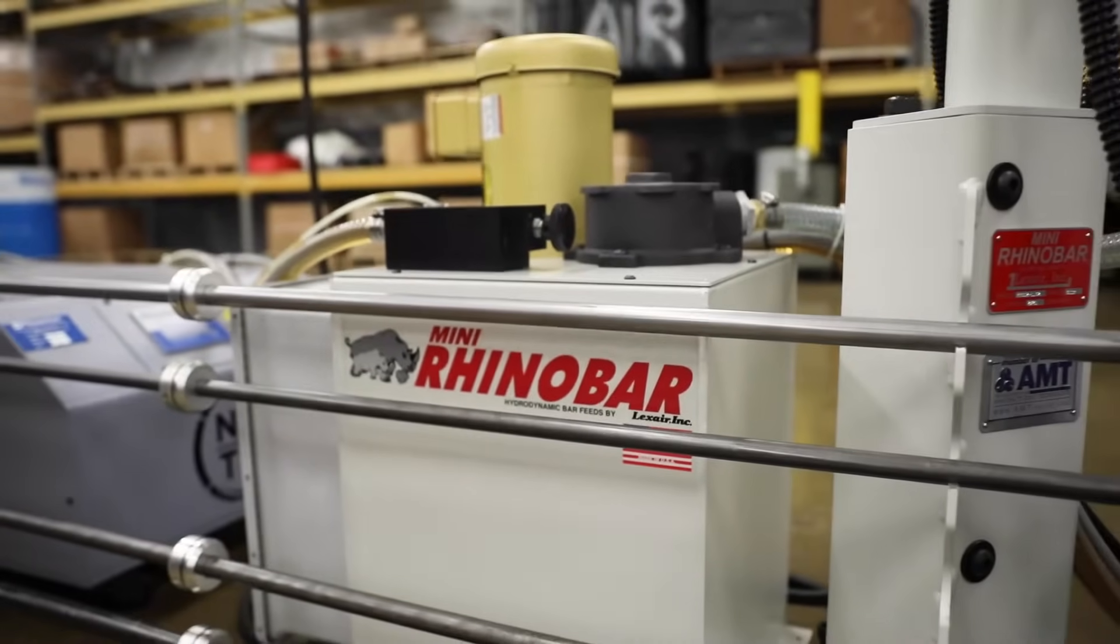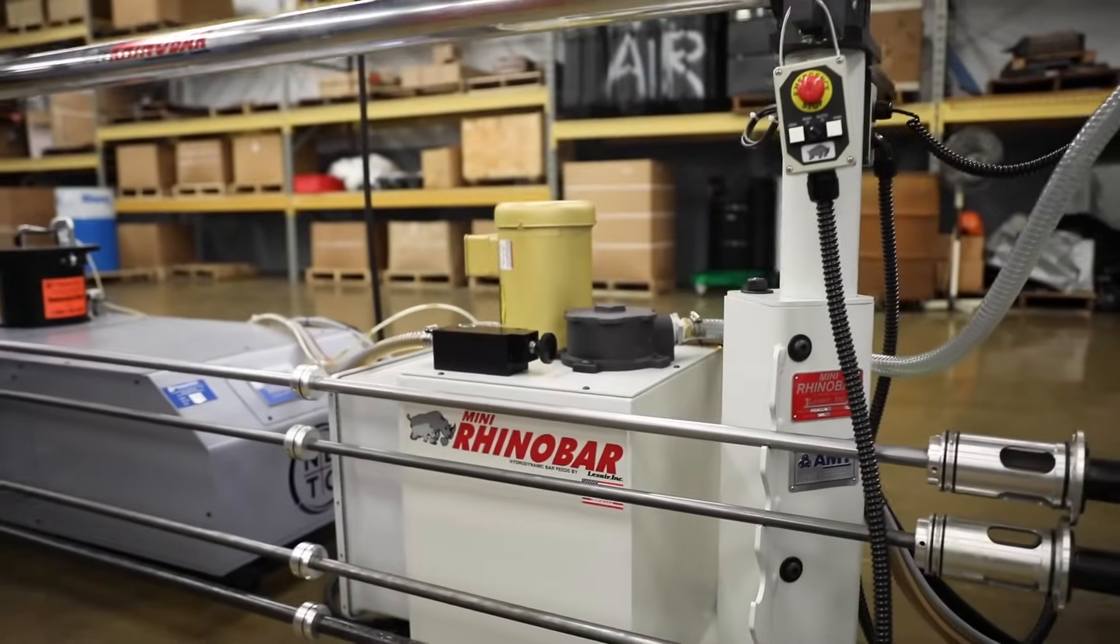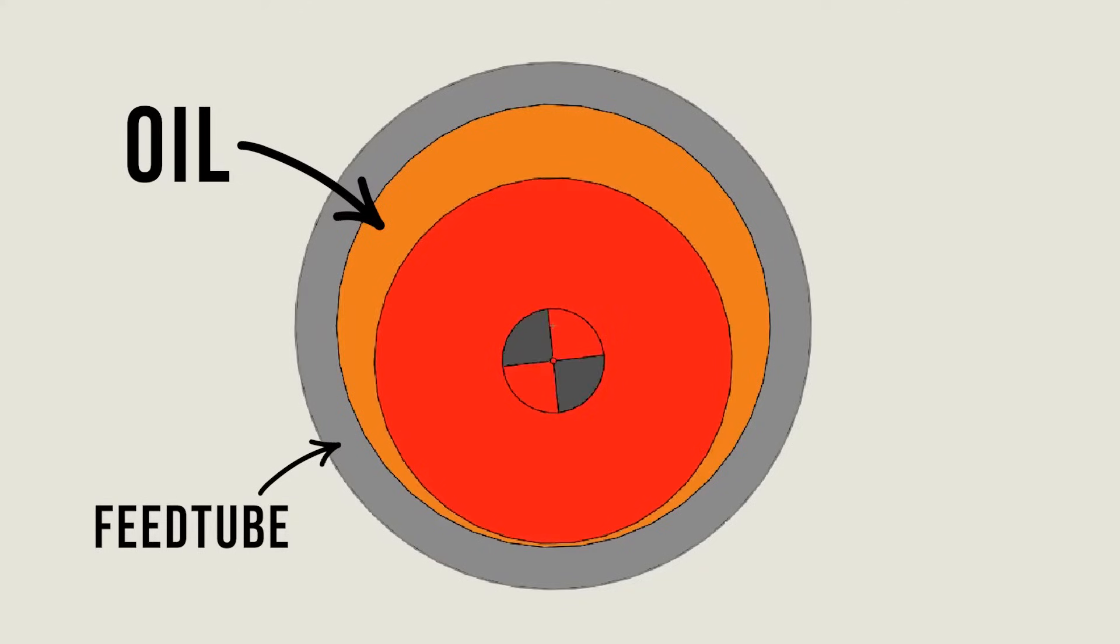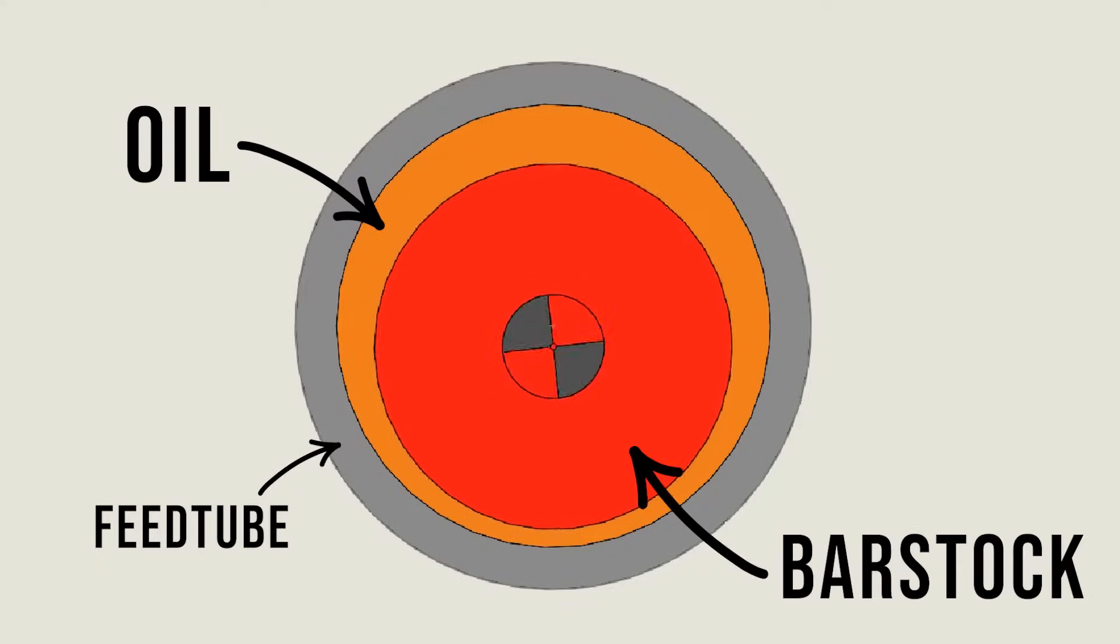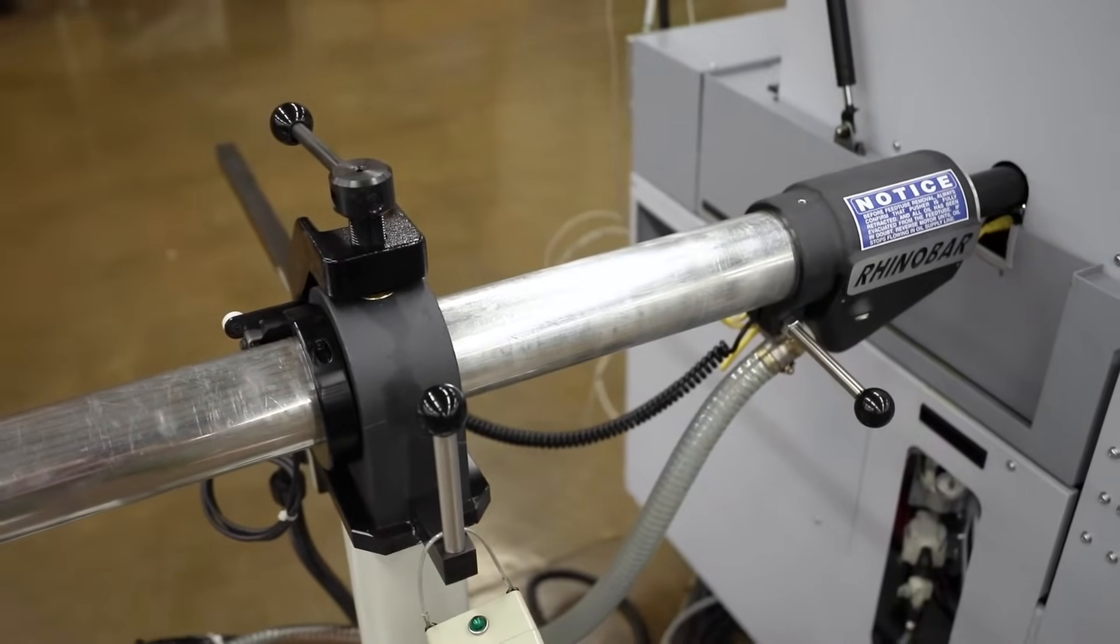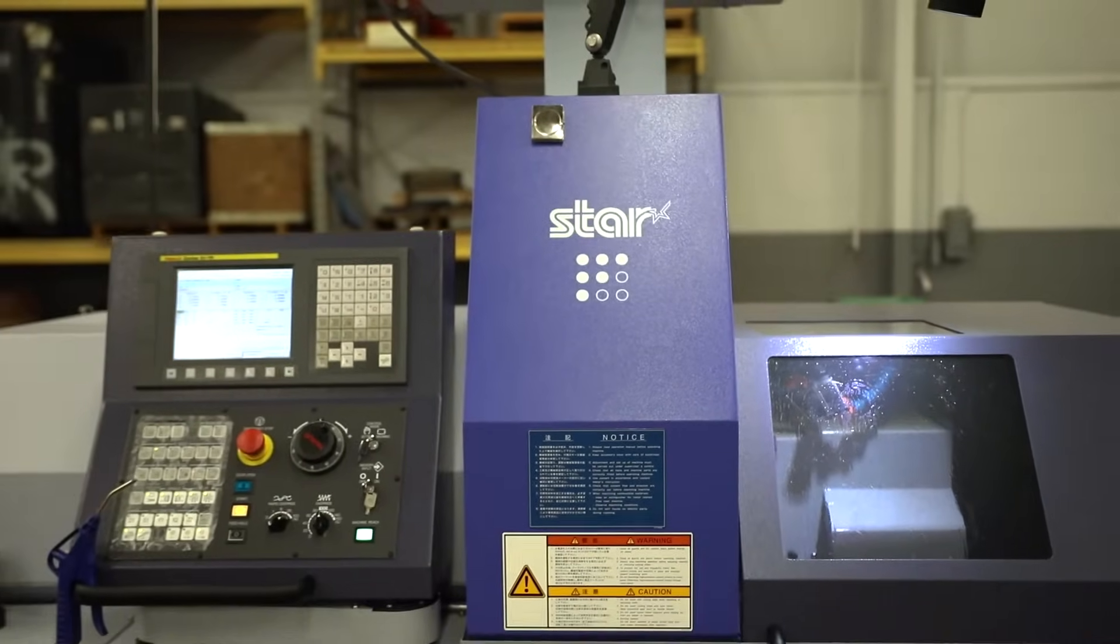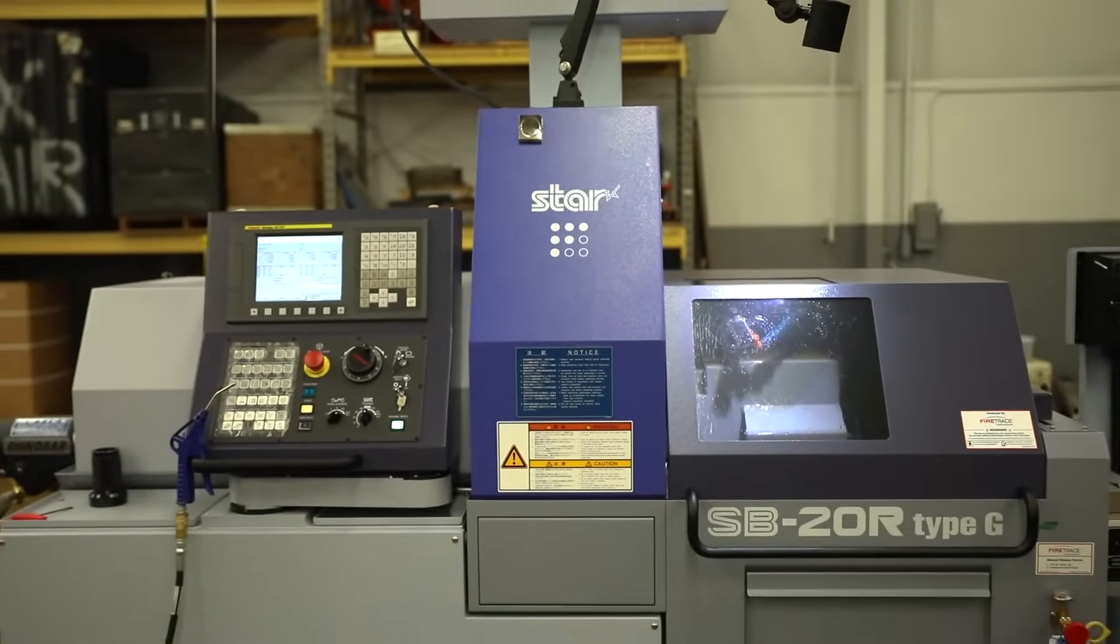The Mini Rhino Bar employs an innovative hydrodynamic principle, setting it apart from similar machines. Oil fills the internal gap between the bar stock and the feed tube. As the bar begins to turn, hydrodynamic forces pull the bar stock toward the center. As the turning speed increases, centering forces are amplified, ensuring full support of material and vibration-free performance at max operating speeds on your machine.